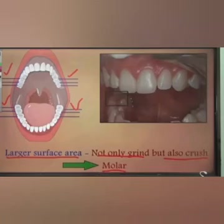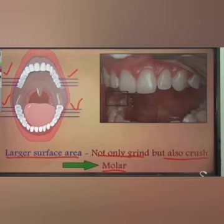Just next to the premolars there are broad and flat teeth used to chew, crush, and grind food, which are known as molars, also called grinding teeth. There are three molars present on either side of the premolars, meaning six molars in each jaw.